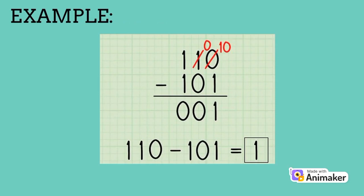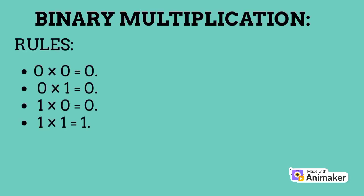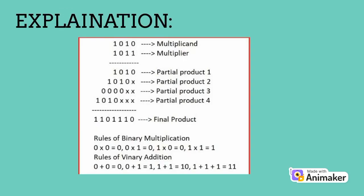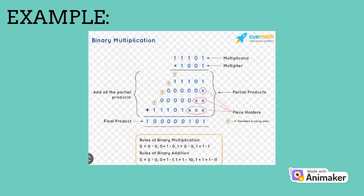Binary multiplication rules: 0 times 0 equals 0; 0 times 1 equals 0; 1 times 0 equals 0; 1 times 1 equals 1. Here is an explanation showing the multiplicand and multiplier converting into different partial products and then the final product. Here is an example of binary multiplication.